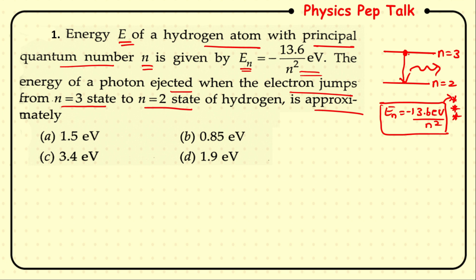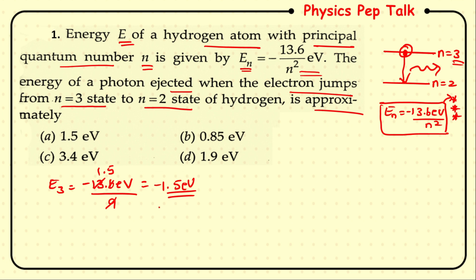For n = 3, E₃ = −13.6 eV / 3² = −13.6 / 9 = −1.5 eV.